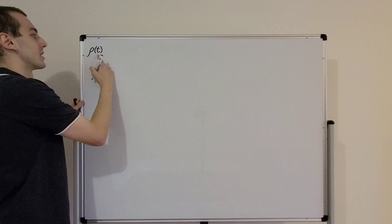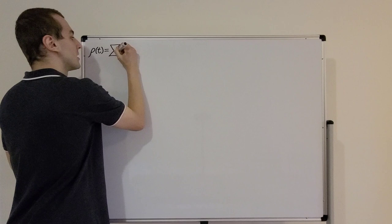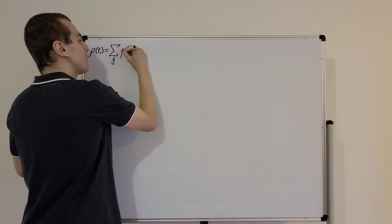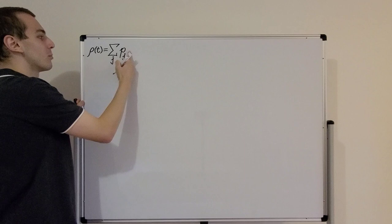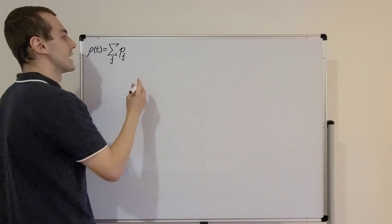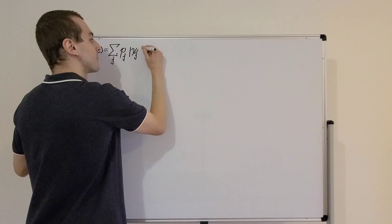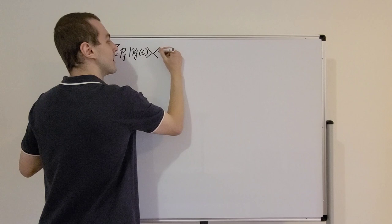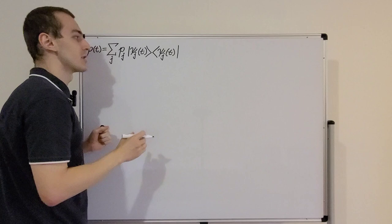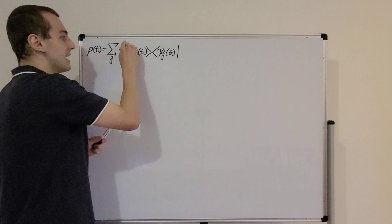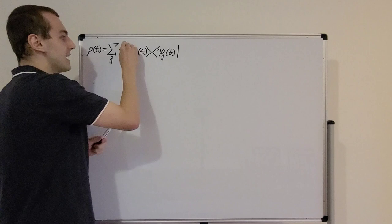Rho depends on time, and we express it as a sum over some index j with probabilities p sub j. Rho is the density matrix, and the p sub j's are probabilities — that's a very important distinction. Then we need the ket-bra combinations: a ket psi sub j dependent on time, and a bra psi sub j dependent on time. This ket-bra combination is not the same as a bra-ket combination; if we had bra followed by ket, that would be an inner product. This is not an inner product — we're using this to construct the density matrix.